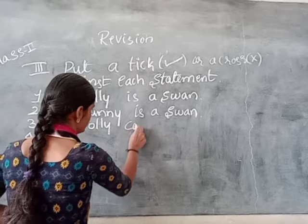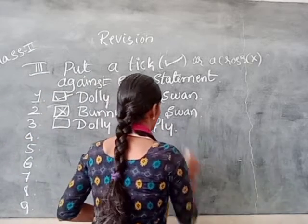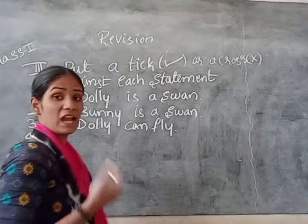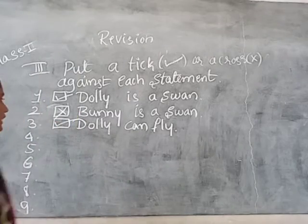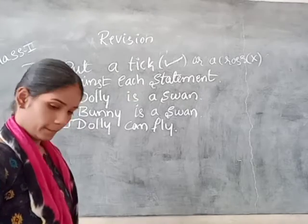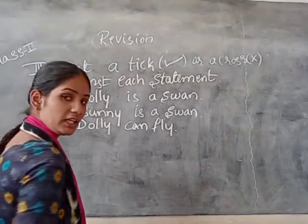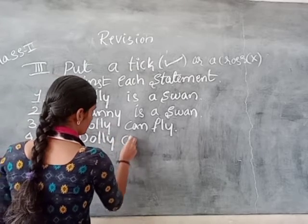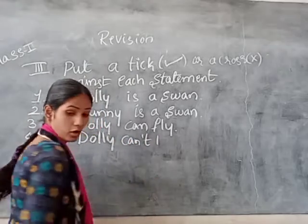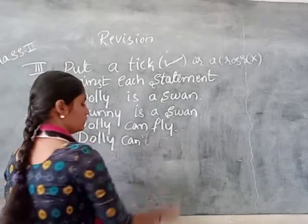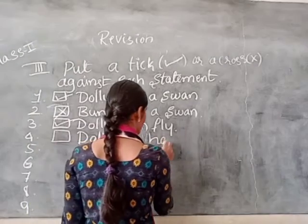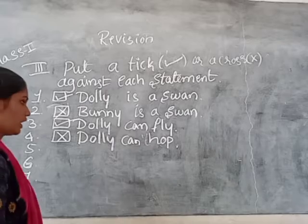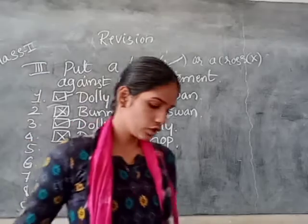Next: Dolly can fly. Can Dolly fly? Yes, Dolly can. So that is the correct answer. Next: Dolly can hop. Can she hop? No, she can't. So it is the wrong one.